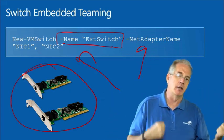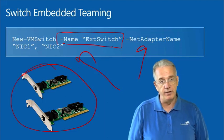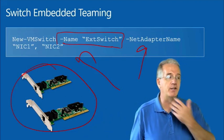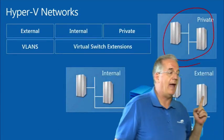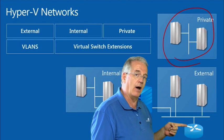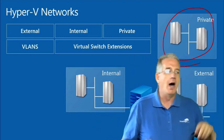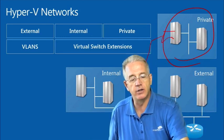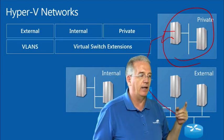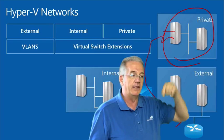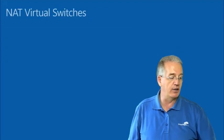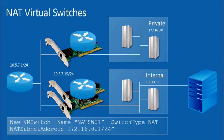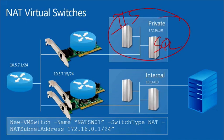Another issue with these networks is that they are separate networks. If you have an external network, it already has access to the regular network. But with private or internal networks, you may want an interface that hooks into the LAN, and you need the physical switch to handle these MAC addresses. One approach is network address translation. Here we have a private network with a SQL server and an IIS server communicating back and forth.